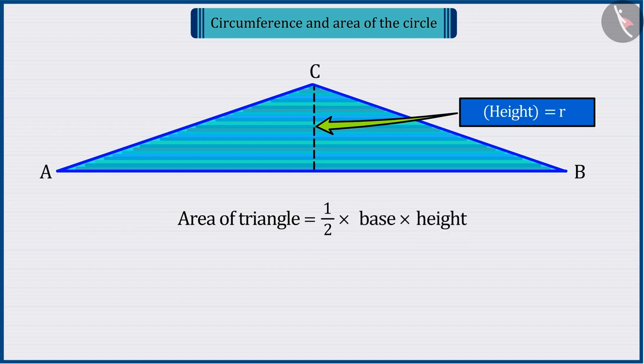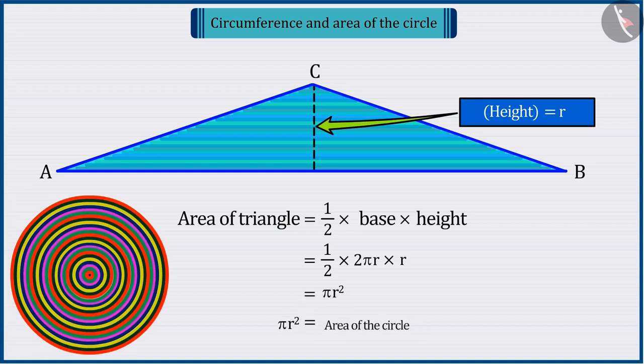therefore, in the area formula on putting the value of base and height of this triangle and solving, we have the area of the triangle pi r raised to the power 2, which will be equal to the area of the circle.